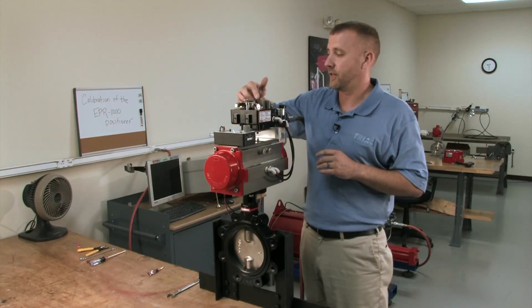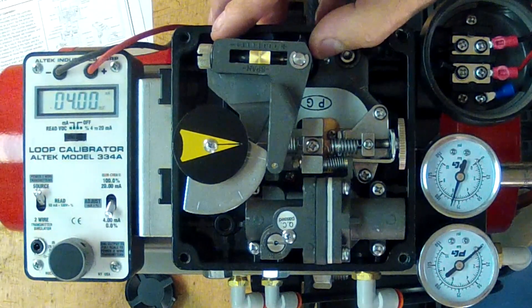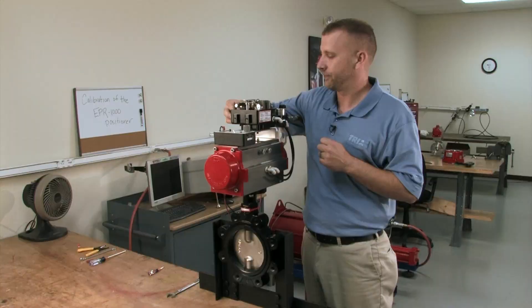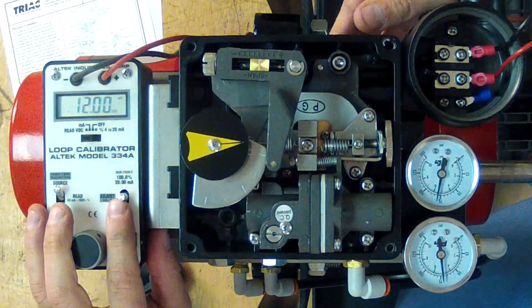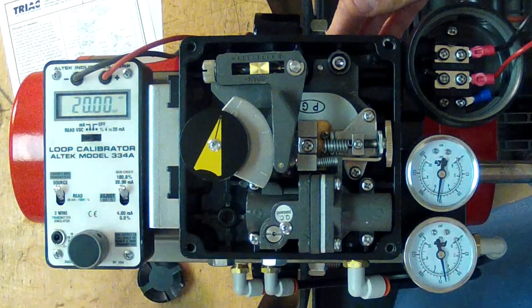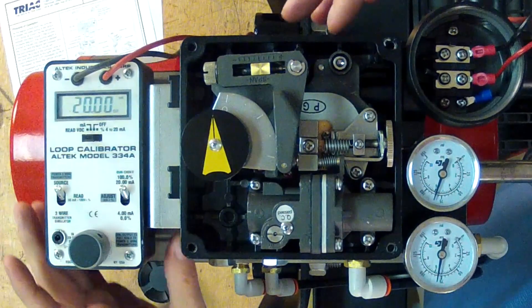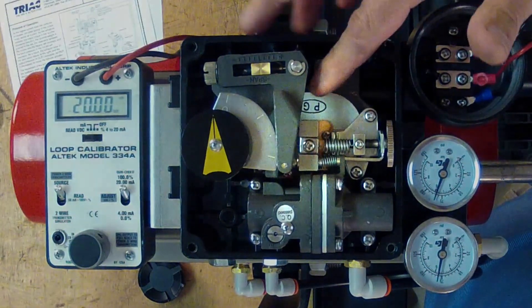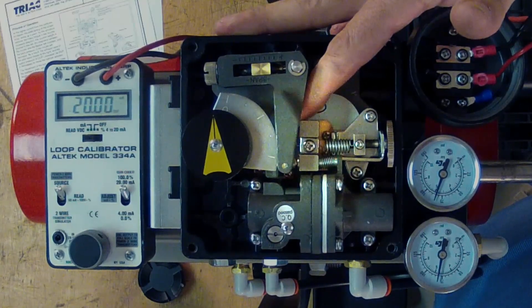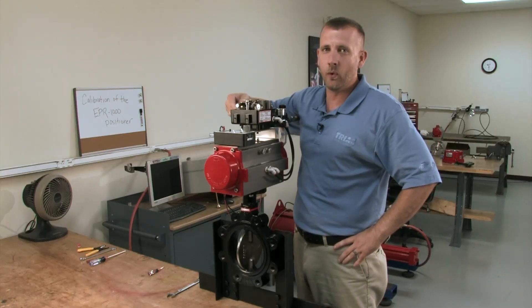One other thing about this positioner is your zero and your span are interactive. That means if you adjust one, you typically have to adjust the other. Now, we're going to run to the 20 milliamp position. And one way to check for your full open in your 20 milliamp position is your counterweight here. You can pull towards you and if you don't hear any air bleed off, that means your actuator and positioner are in the full open position.